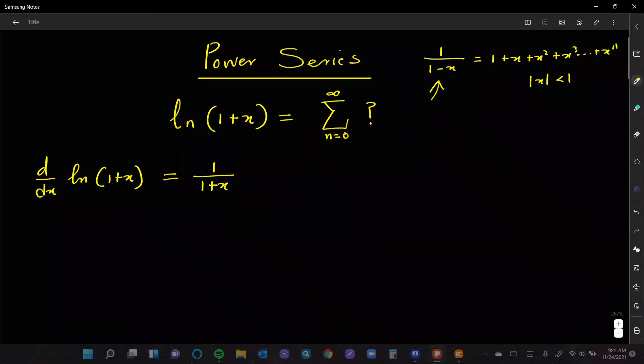As you can see, 1 over 1 plus x looks very much like 1 over 1 minus x. We're just saying in this case that x is negative, and this implies that we have 1 over 1 minus negative x.